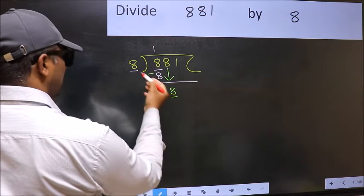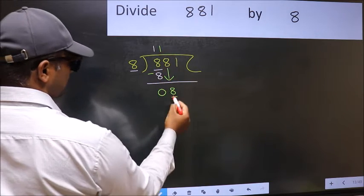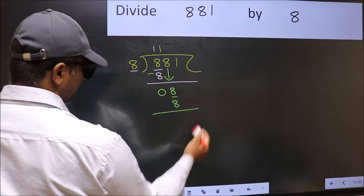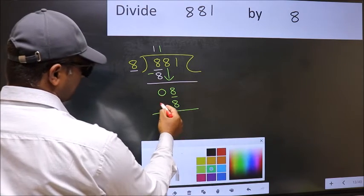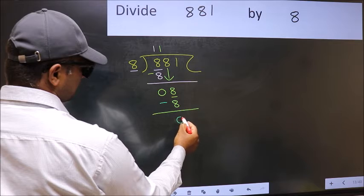Now 8, when do we get 8 in the 8 table? 8 once, 8. Now we should subtract. 8 minus 8, 0.